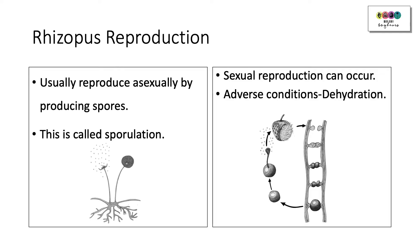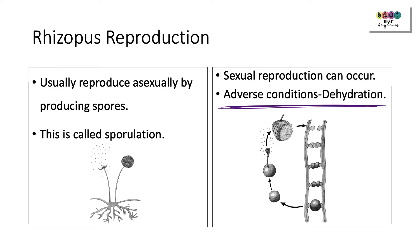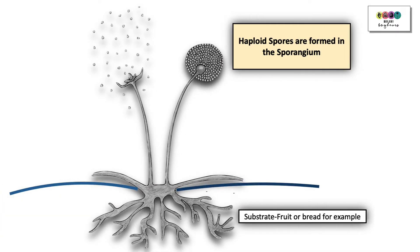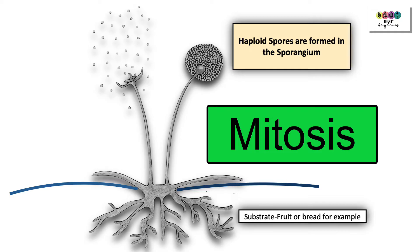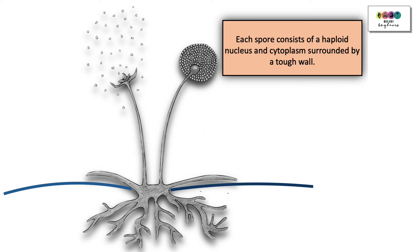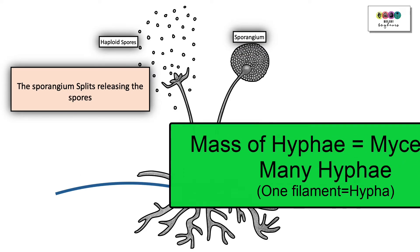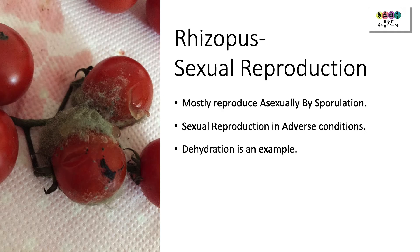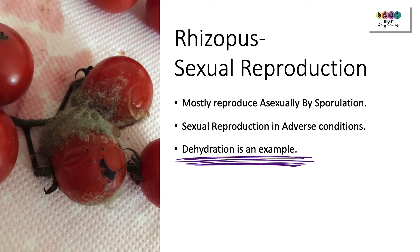Rhizopus usually reproduces asexually by producing spores — sporulation. In adverse conditions such as dehydration, Rhizopus can undergo sexual reproduction. Spores are reproductive cells; they're not gametes but can give rise to a new individual with no fusion required. Haploid spores are formed in the sporangium by mitosis. Each spore has a haploid nucleus and cytoplasm surrounded by a tough wall. The sporangium eventually splits, releasing spores that, if they land on a suitable substrate, grow into hyphae and then mycelium.